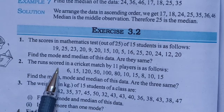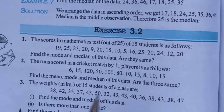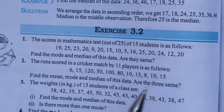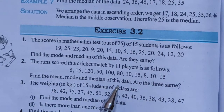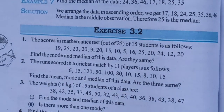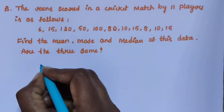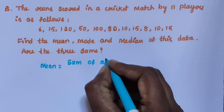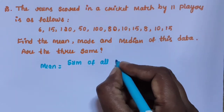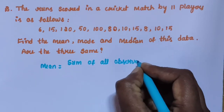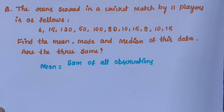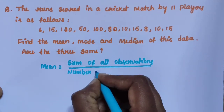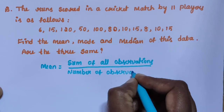Next, question number 2. The runs scored in a cricket match by 11 players are as follows: 6, 15, 120, 50, 100, 80, 10, 15, 8, 10, 15. Find the mean, mode and median of this data. Are the three the same? First find the mean. Mean is equal to sum of all observations divided by the number of observations.